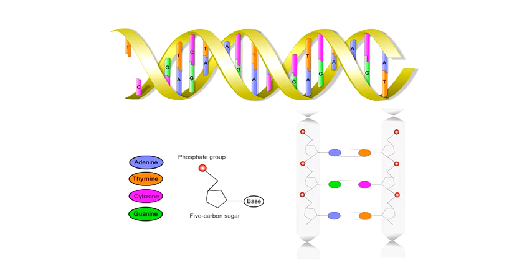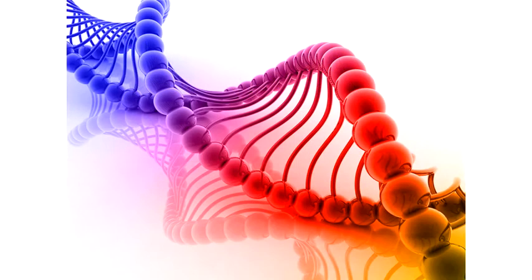Nitrogenous bases of one polynucleotide strand form hydrogen bonds with nitrogenous bases of another polynucleotide strand, which is termed base pairing. The two polynucleotide strands wind around one another to form the double helical structure of DNA.